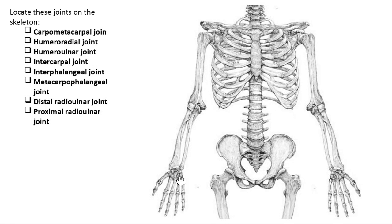Just like the foot had names for all of the tarsals, we have names for all of the carpals as well. We'll take class time today to go over a mnemonic for the carpal bone names. The metacarpals and the phalanges are named the same way as the ones in the foot, so those are easy to memorize.